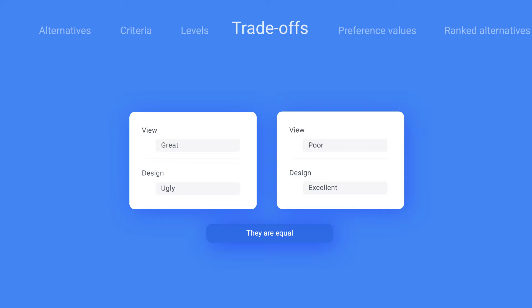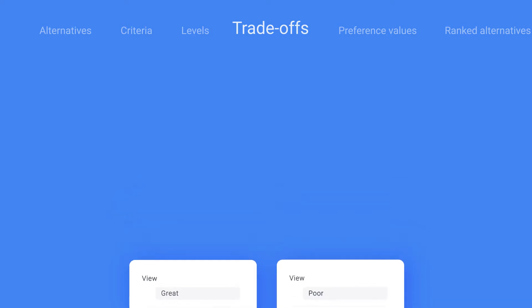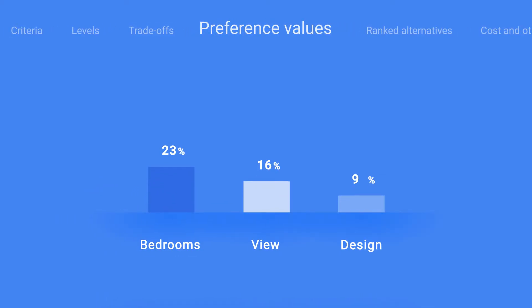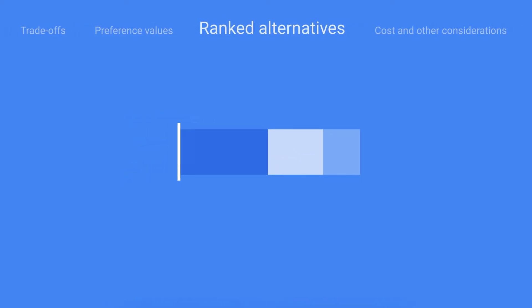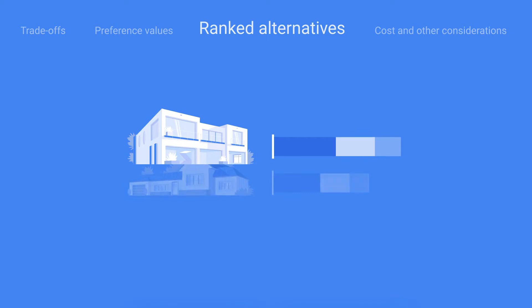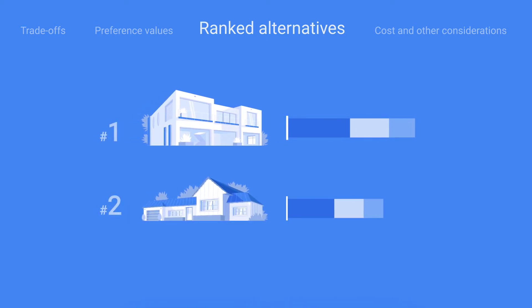1000minds uses the trade-offs you make to determine how much each of your criteria matters to you. These weights or relative importances are called preference values. Then your alternatives will be scored and ranked according to these preference values and the alternatives' performance on each criterion. You can add alternatives either before or after making trade-offs.